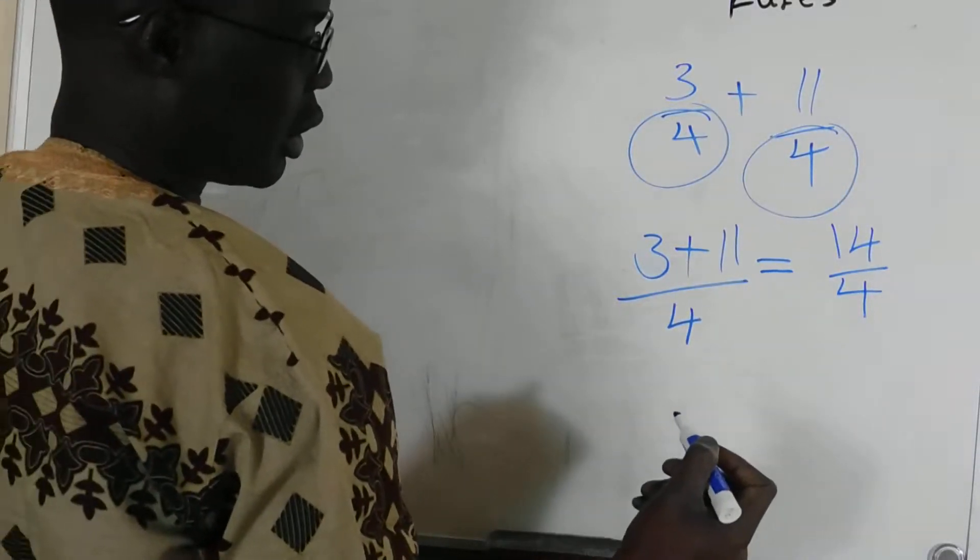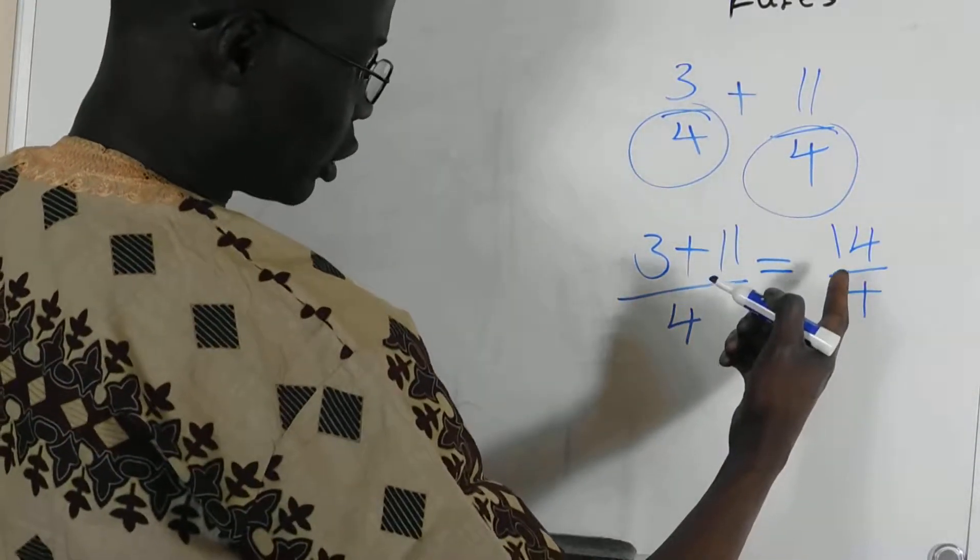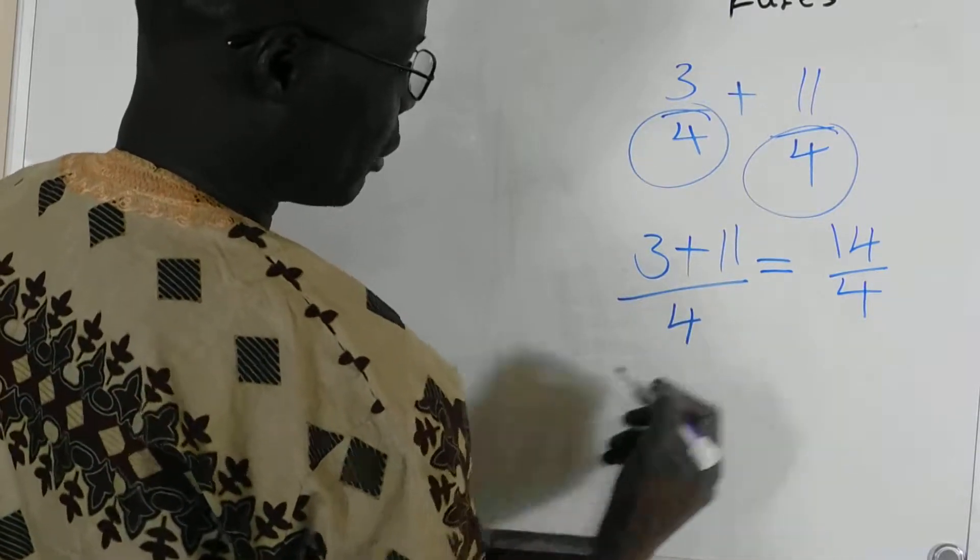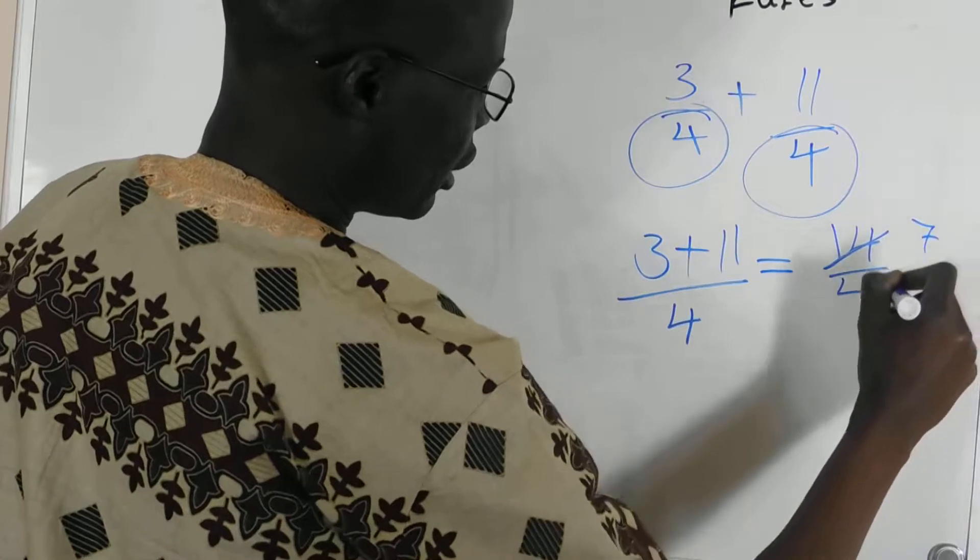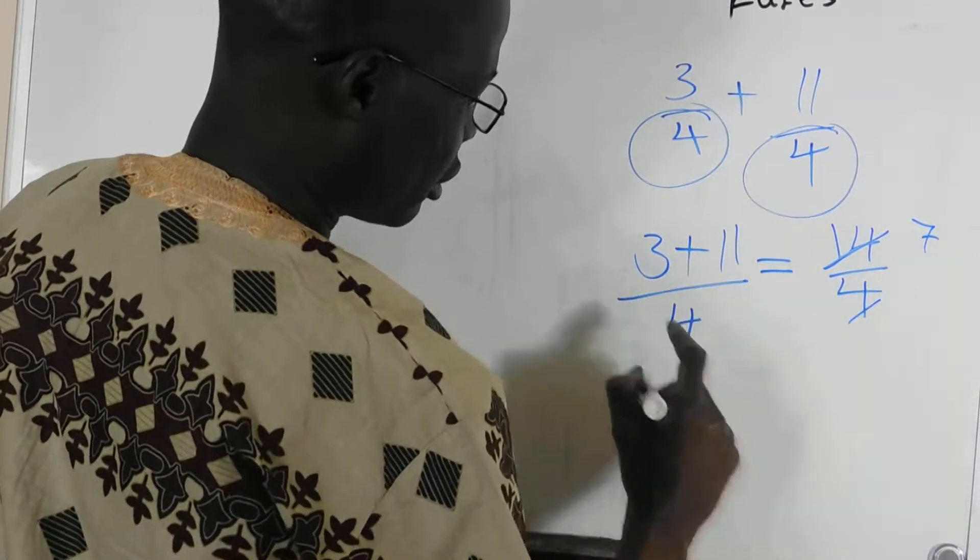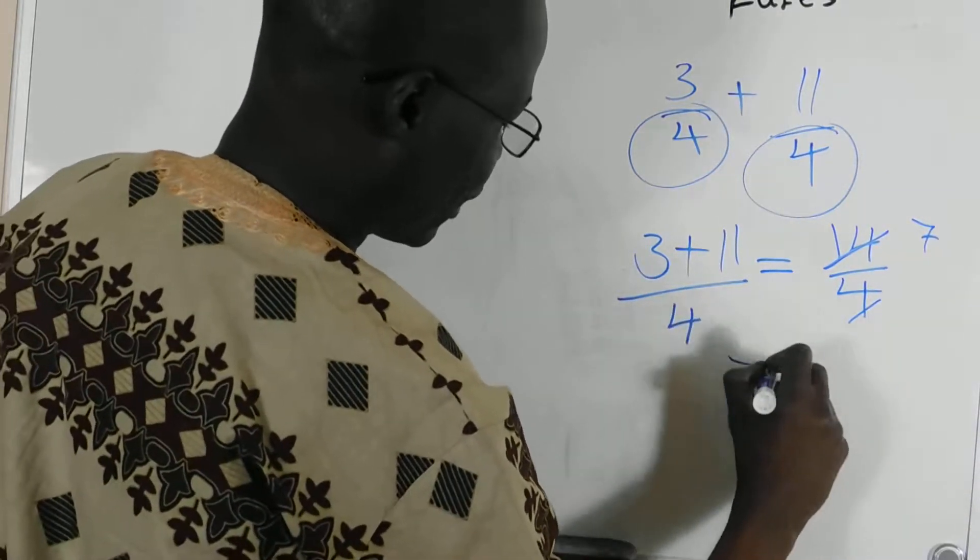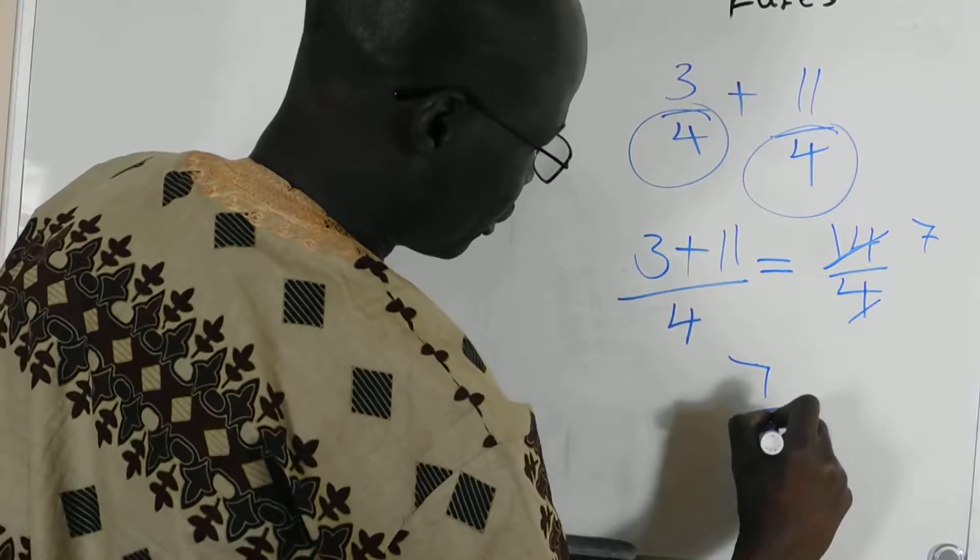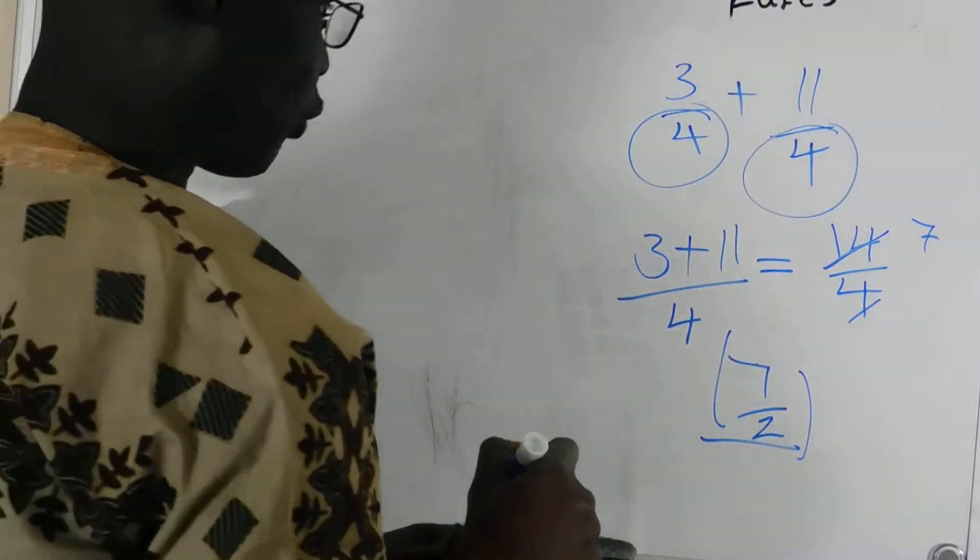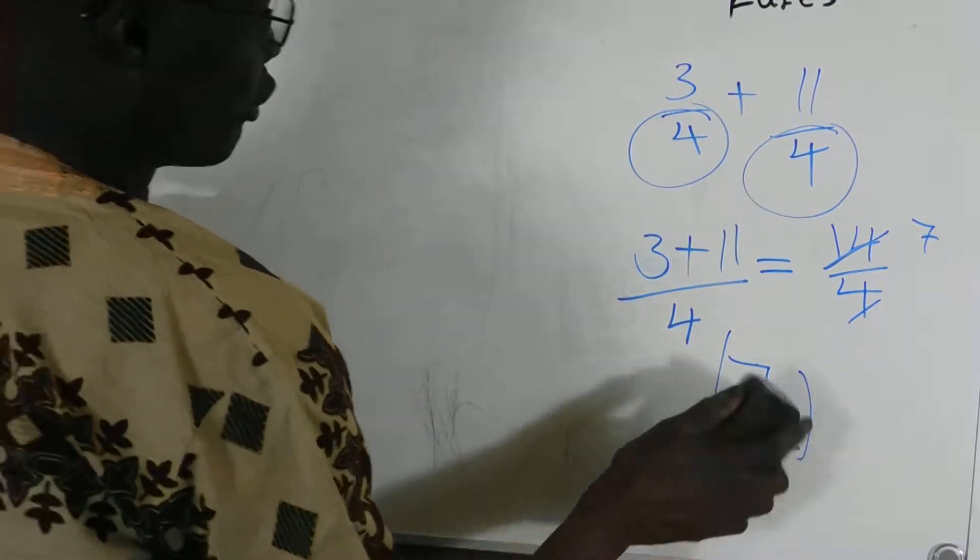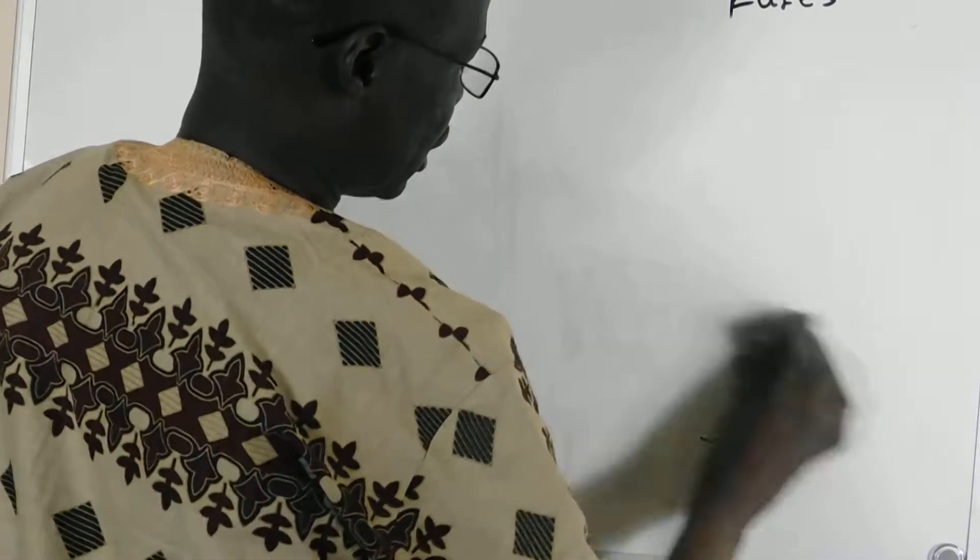And this should be 14 divided by 4, and you can divide this number to 2, so it would be a 7, and to 2 here, it should be 7 over 2. So, you can leave it as 14 over 4, but that's what you get.